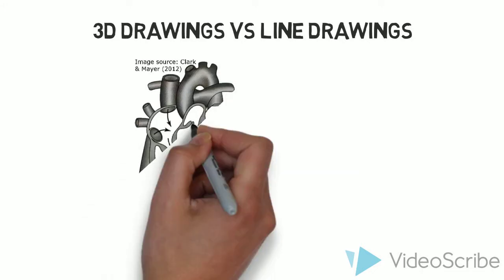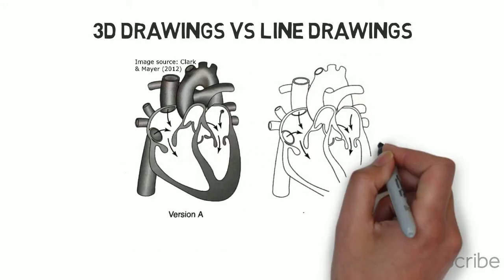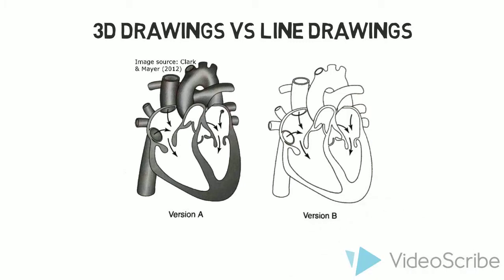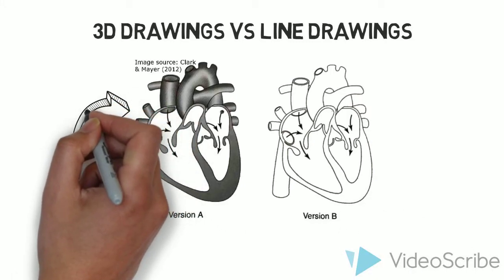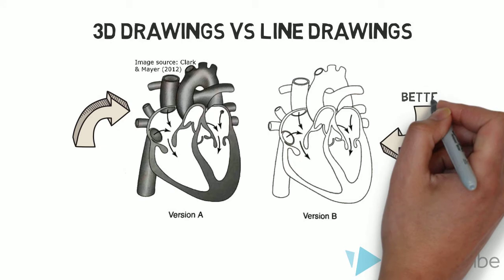To compare 3D drawings with line drawings, researchers looked at three lessons about the circulatory system, one text only, one with version A of the heart, and one with version B of the heart. While students who learn with visuals did better than students who learned with only text, the students who did best learn with the line drawing, version B.